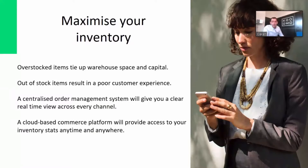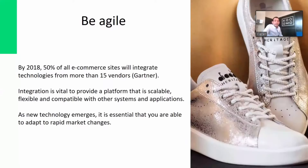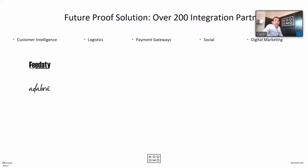Overstocked items tie up warehouse space and capital, while out-of-stock items result in a poor customer experience. You don't want a situation where someone shopping online only has access to the main warehouse stock and not what's available in-store. Omni-channel allows you to synchronize inventory at both the store level and warehouse level to ensure availability for the customer.